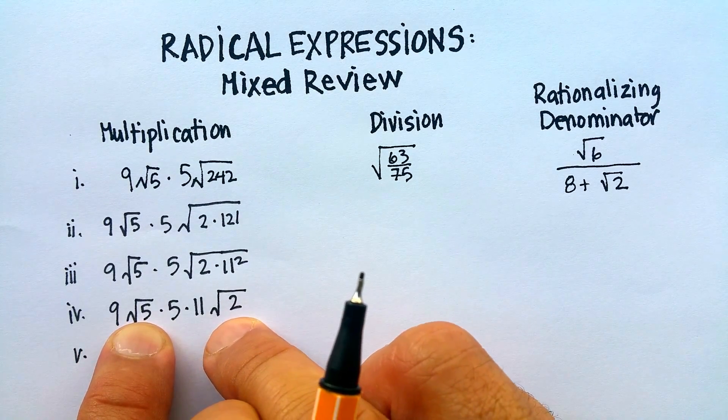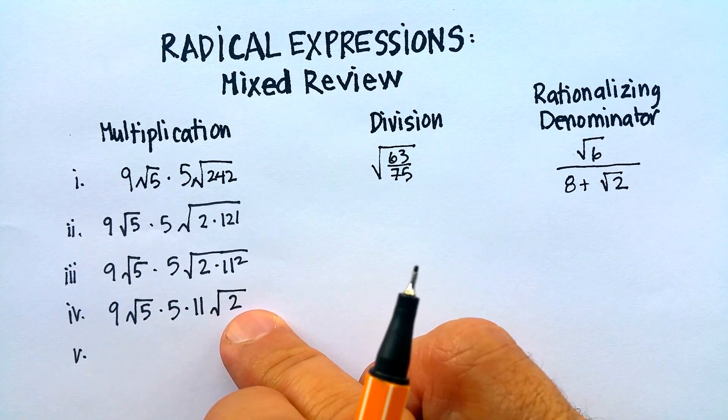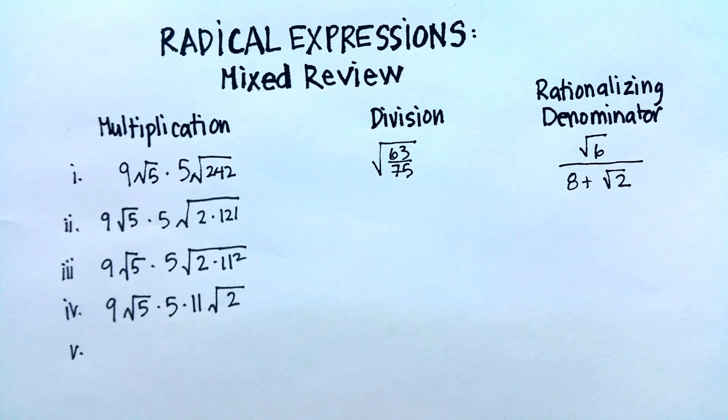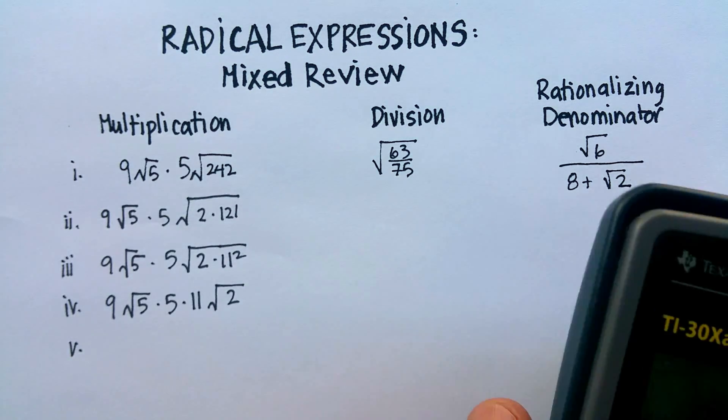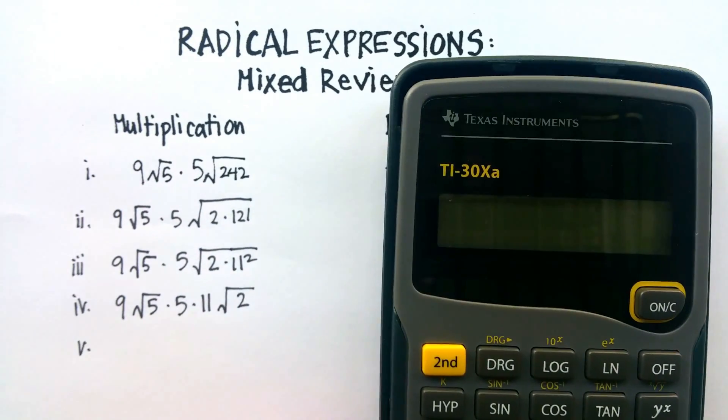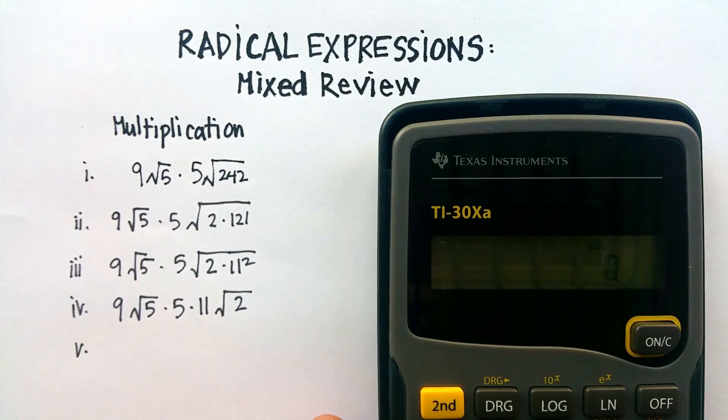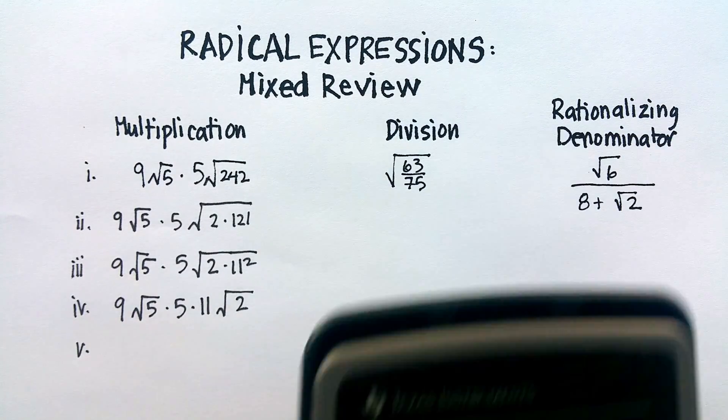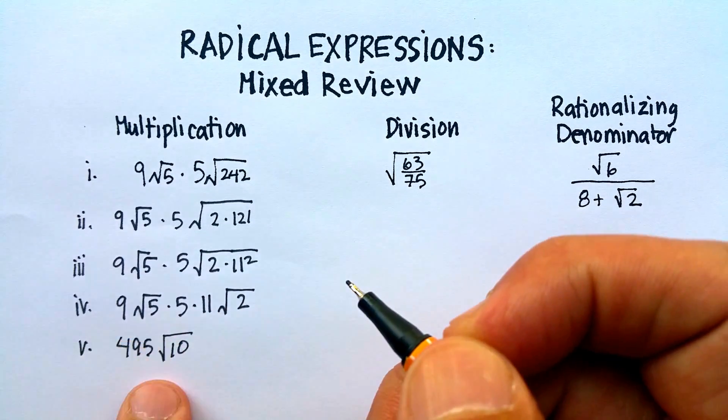So now since these are both prime factors underneath, and I can't go any further, and these are all the numbers that are coefficients, I can multiply the coefficients and then multiply the radicands. So I get 9 times 5 times 11. Let's just go ahead and get my calculator out. 9 times 5 times 11 gives me 495. So out here I've got 495 times radical 10, and that would be my answer.